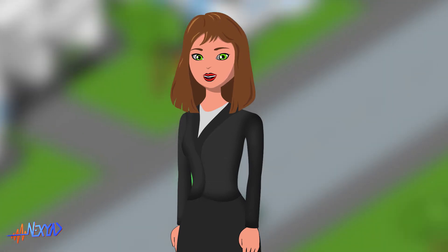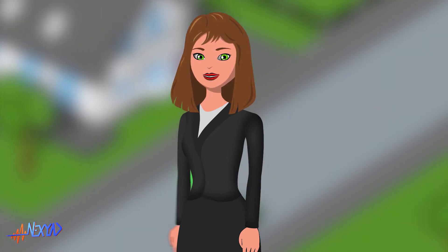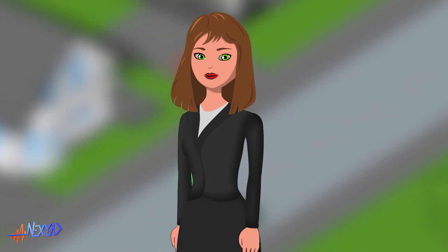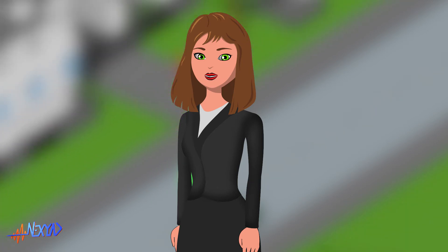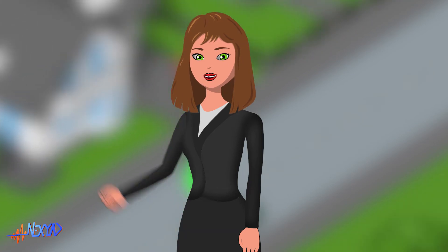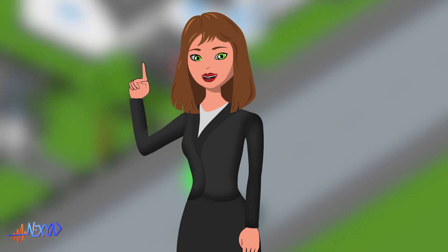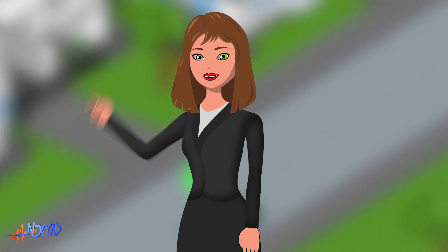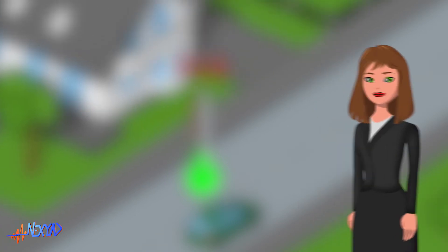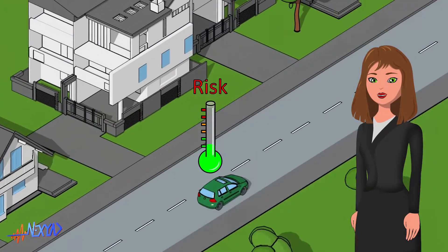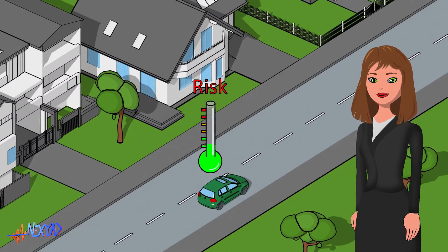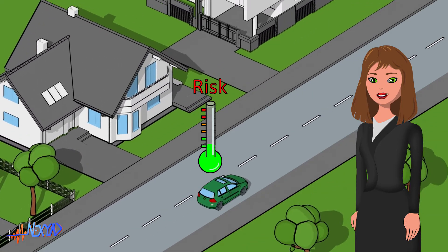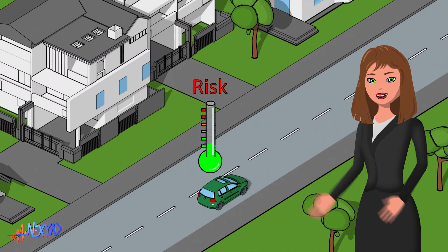Contrary to what many people think, there is no inherently dangerous road context and there is no inherently dangerous driving behaviour. It is when driving behaviour is inappropriate to the road context that the driving risk appears. All approaches based solely on driving behaviour analysis, severe braking, etc., or on a list of black points, are therefore doomed to failure.